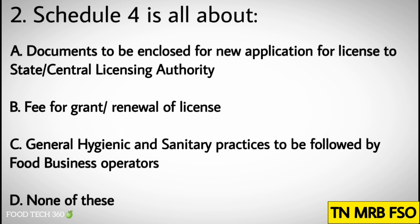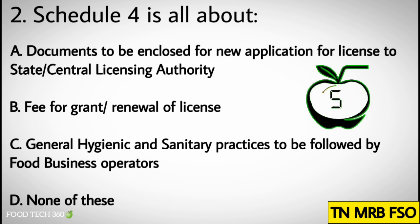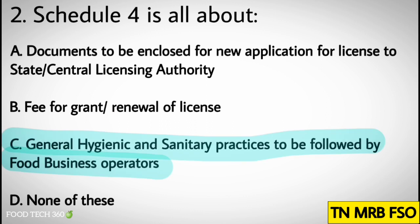Question number two: Schedule four is all about — options: A) Documents to be enclosed for new application for license to state or central licensing authority, B) Fee for grant or renewal of license, C) General hygienic and sanitary practices to be followed by food business operators, D) None of these.